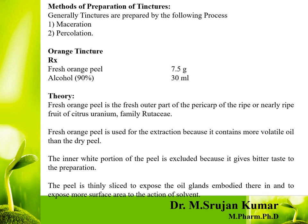That completes the different extraction processes. Coming to the next topic: methods of preparation of tinctures. Generally tinctures are prepared by two processes — maceration and percolation. The example for tincture preparation is orange tincture. The formula is: fresh orange peel 7.5 grams, alcohol 90% 30 ml.